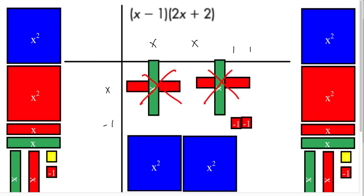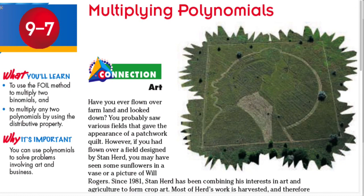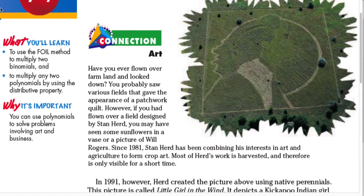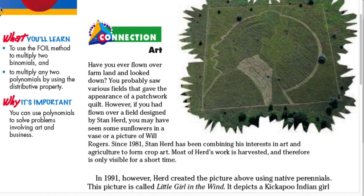That's how you use algebra tiles to multiply binomials. Algebra tiles are useful for visual purposes so you can see exactly why multiplying binomials forms a rectangle. However, it is impractical to use with bigger numbers. Now let's go to our lesson proper, 9-7: Multiplying Polynomials. In this lesson you will use the FOIL method to multiply two binomials and multiply any two polynomials using the distributive property.